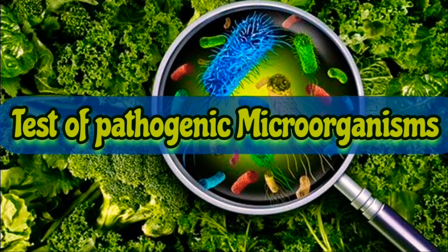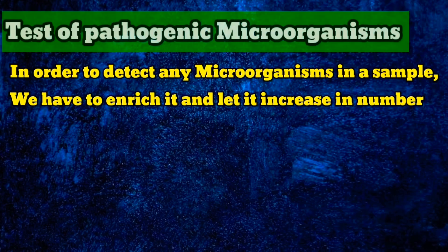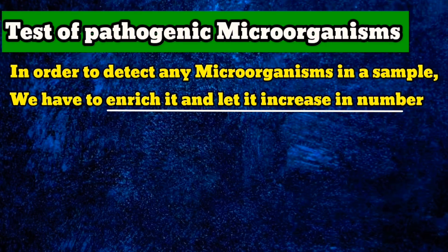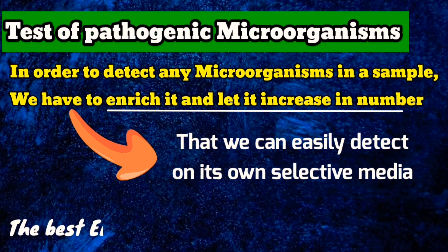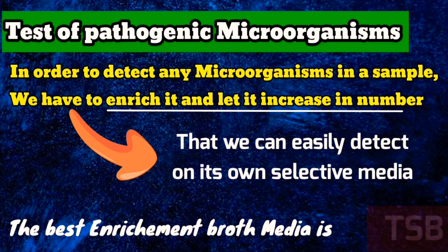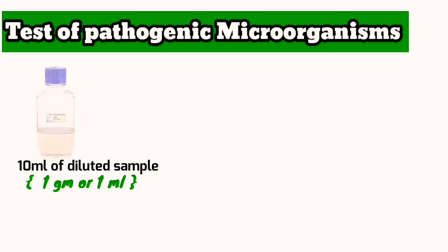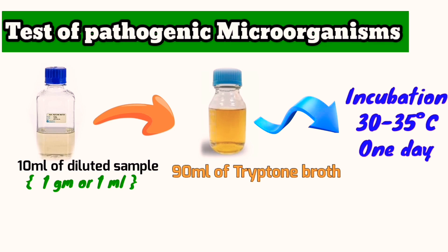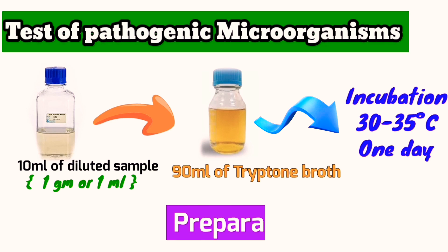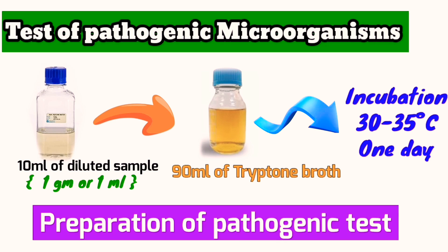To detect pathogenic microorganisms in a sample, we first have to enrich it and let the organisms increase in number so we can detect them on selective media. The best enrichment broth for many microorganisms is tryptone soybean broth. Take 10 ml of diluted sample in buffer and transfer it into 90 ml of tryptone soybean broth, then incubate at 30 to 35 degrees Celsius for one day. This step is called preparation of pathogenic tests, because we must increase and enrich the microorganisms before transferring to selective media.